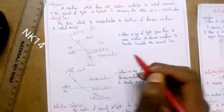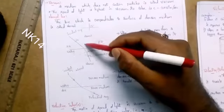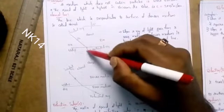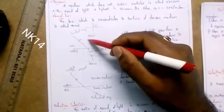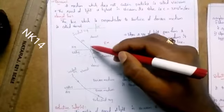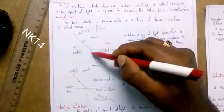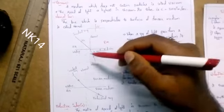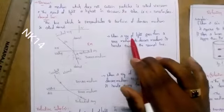The line which is perpendicular to the denser medium is known as the normal line. The dotted line is taken as the normal line; it will be perpendicular to the denser medium surface.